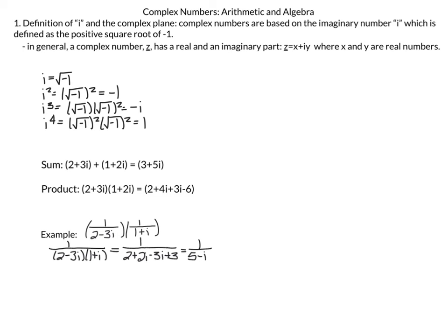Another example: 1 divided by (2 minus 3i) times 1 divided by (1 plus i) is simply 1 over (2 minus 3i)(1 plus i). Expanding: 2 times 1 gives 2; 2 times i gives 2i; minus 3i times 1 gives minus 3i; and minus 3i times i gives positive 3, since the two i's yield negative 1. So the final answer is 5 minus i.